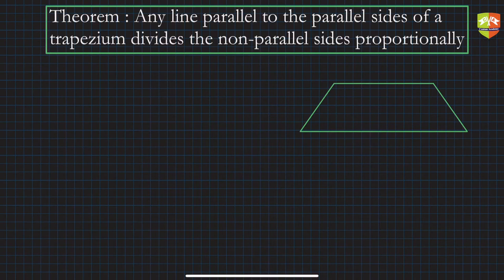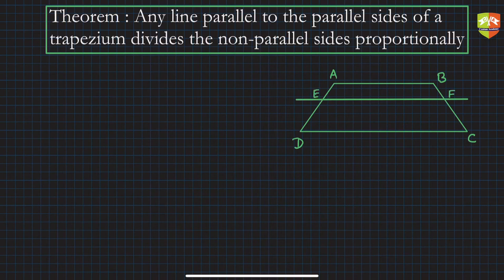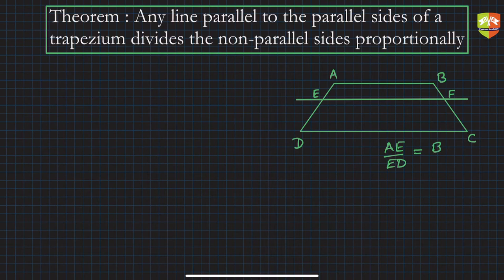So ABCD is our trapezium. Any line parallel to the parallel sides — here is a line parallel to those sides — it divides the non-parallel sides. Let's say this point is E and F. So it divides the non-parallel sides proportionally, meaning AE by ED is equal to BF by FC. This is what we need to prove.